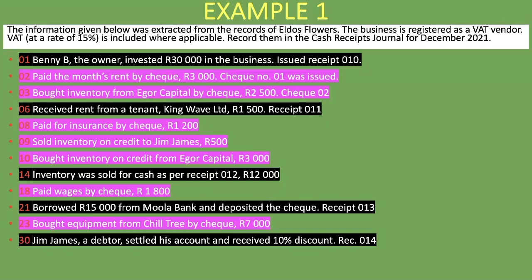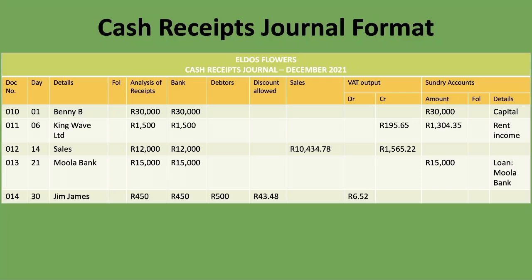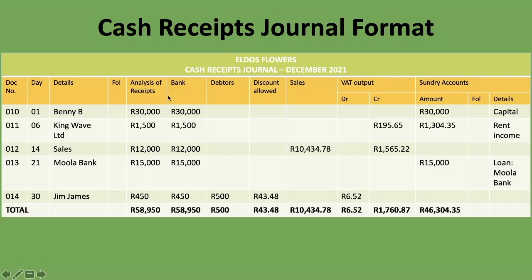We've completed all transactions and can now add our totals. Create a row for totals and sum each column — analysis of receipts, bank, debtors, discount allowed, sales, VAT, and sundry account. The total for analysis of receipts must equal the total for the bank column. If they don't match, something has gone wrong. We have now completed the cash receipts journal accounting for VAT. Please subscribe, like, and share if this lesson has been helpful. Till next time!